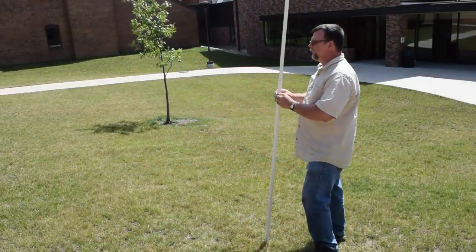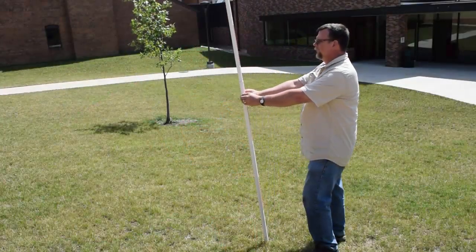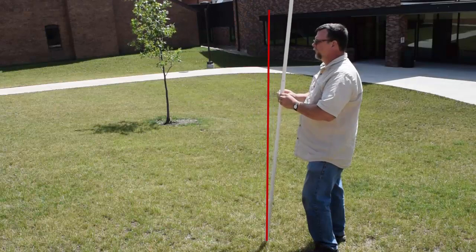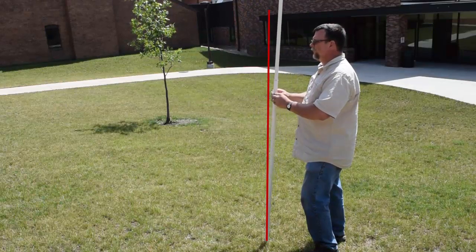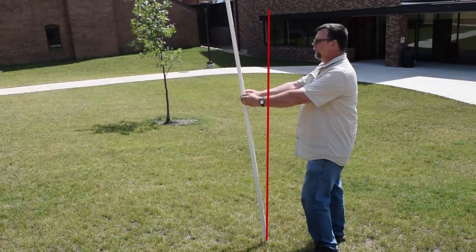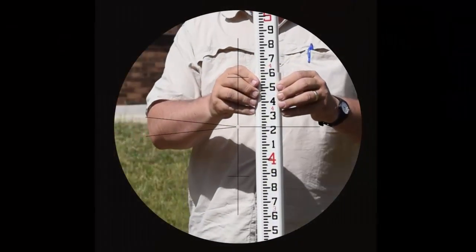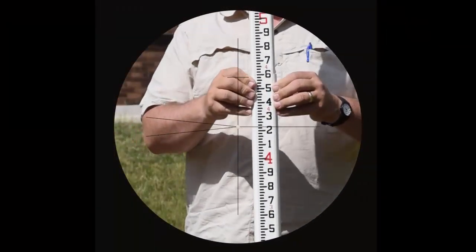Second, if you don't have a rod level, you can rock the rod smoothly back and forth in the direction of the instrument. As the rod passes through the vertical position, the instrument operator will see the reading reach its minimum value momentarily.